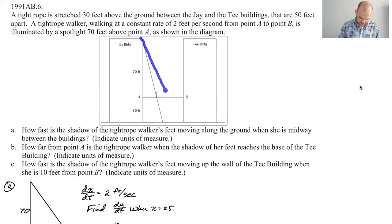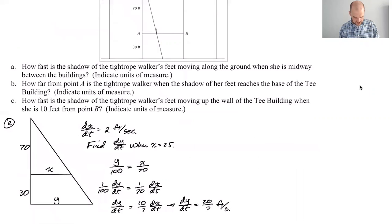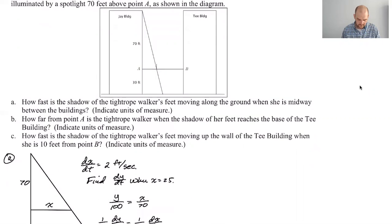Now here's the thing, after that point, after she's gone 35 feet, where's her shadow gonna go? Her shadow is gonna start climbing up the building, so that's something we got to keep in mind. Once you've hit the building, as you get closer, your shadow is gonna start climbing up the building. So how fast is the shadow of the tightrope walker's feet moving up the wall of the T building when she is 10 feet from point B? All right, this time I'm gonna do a whole new picture.